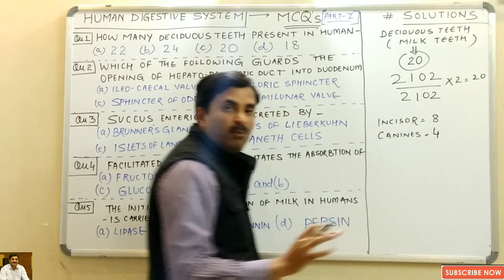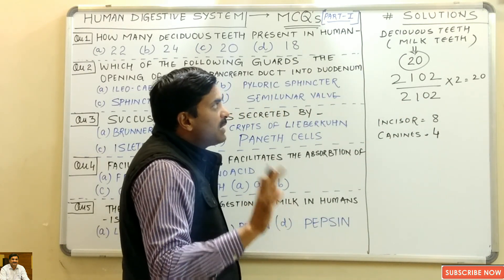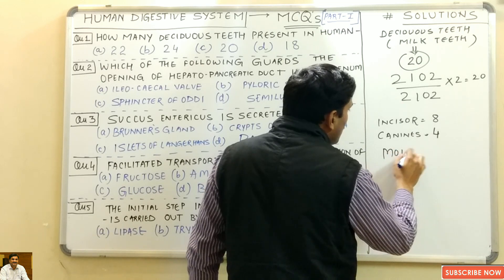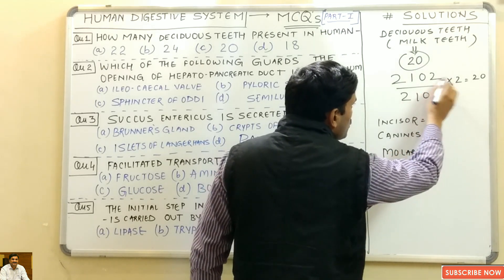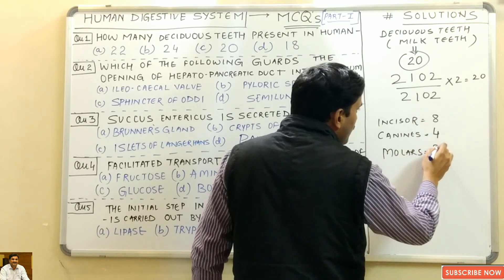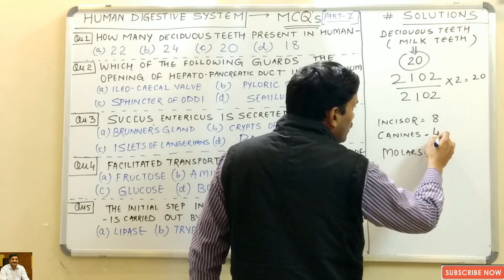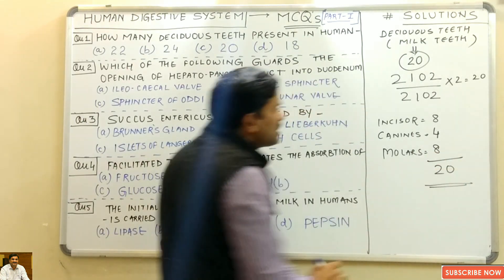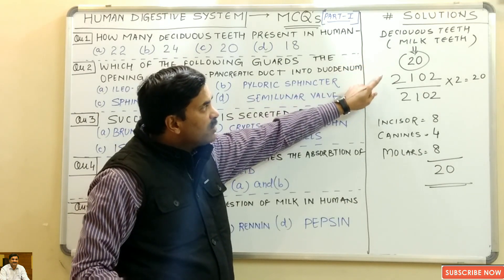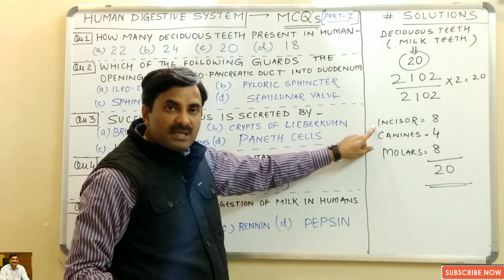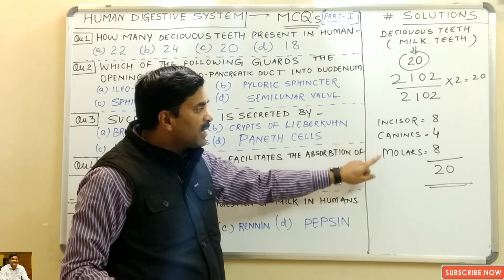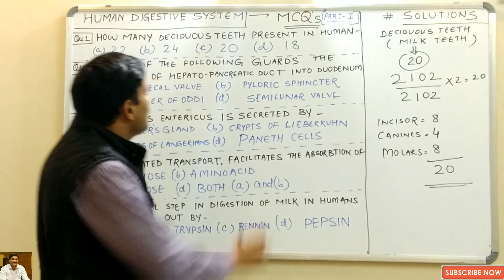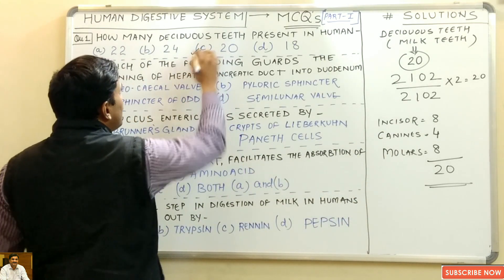Pre-molars are totally absent in milk teeth. The number of molars is 8 (2 per quadrant × 4 quadrants). So: 8 molars + 4 canines + 8 incisors = 20 total. The answer is 20 — option C. The number of deciduous teeth in human beings is 20.